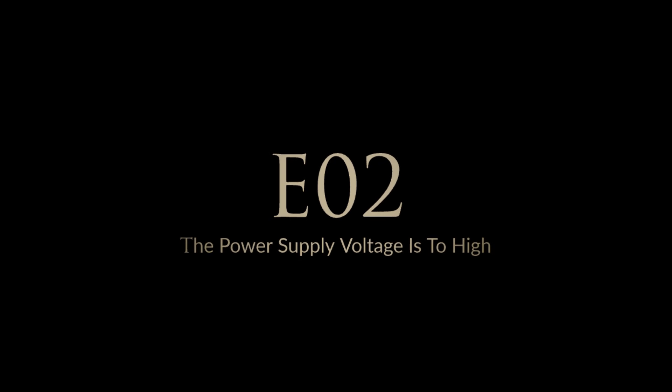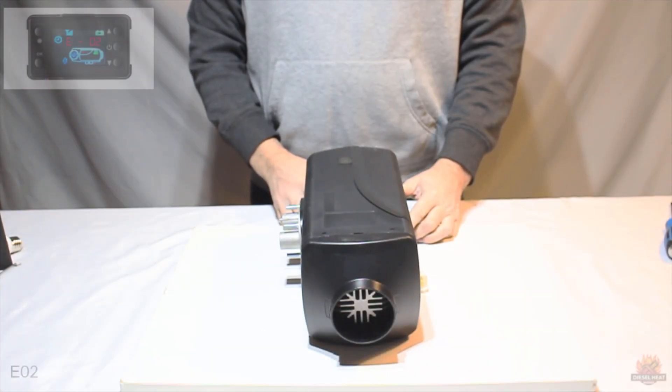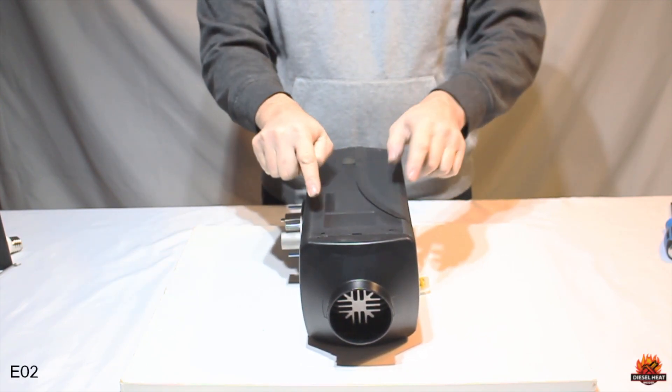Error code 2, the power supply voltage is too high. To resolve error 2, it is necessary to inspect three separate locations.